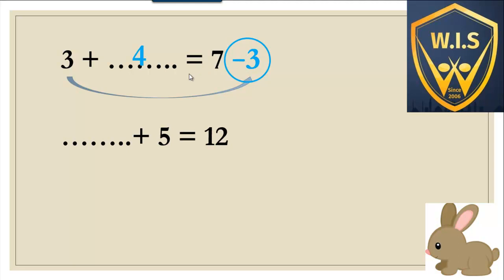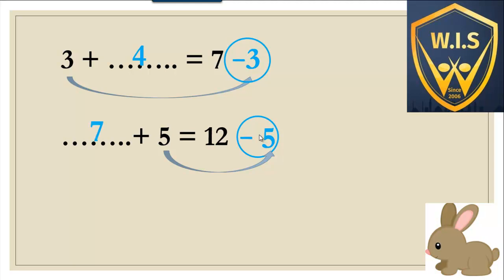We make a circle again, change the sign from plus to minus, and take the number five on the circle: twelve minus five. Put five in my mind, close my hand, count after five: six, seven, eight, nine, ten, eleven, twelve. So it's seven. Seven plus five equals twelve.